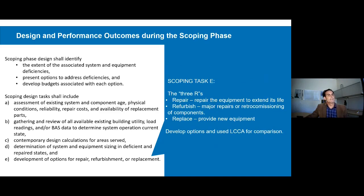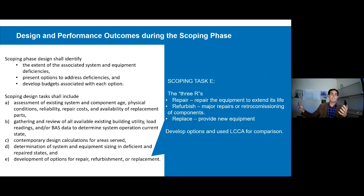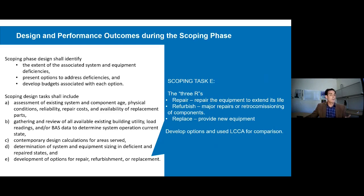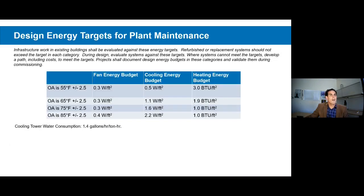The final task of scoping is options development, and we like to talk about these as the three R's: repair, refurbish, and replace. For any system or system component, those are the three things we want to look at — can it be repaired, how long would a repair extend the life, is there major refurbishment or retro-commissioning that can happen, or does it need to be replaced? This is the step where we would do life cycle cost analysis if there are significantly different options with significantly different first costs or downstream costs.